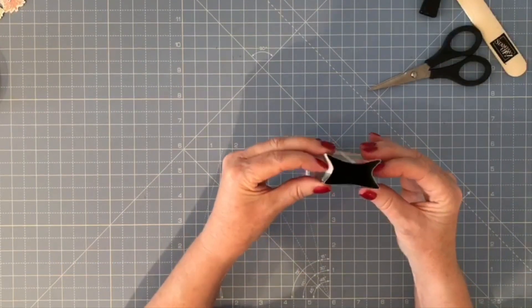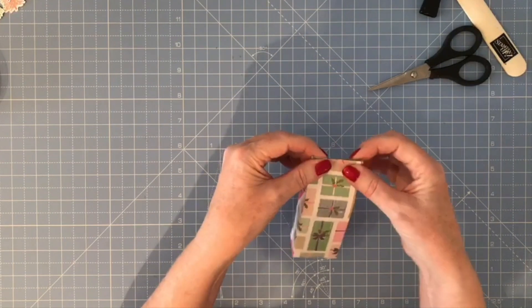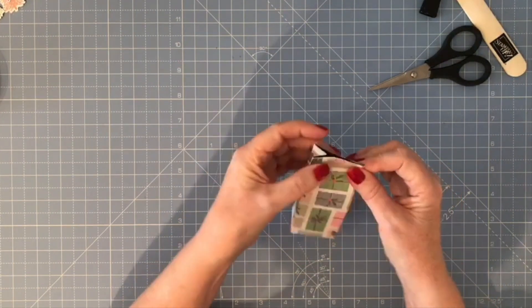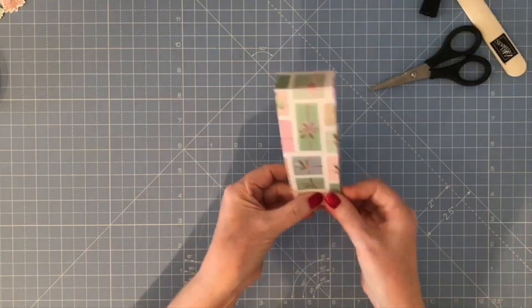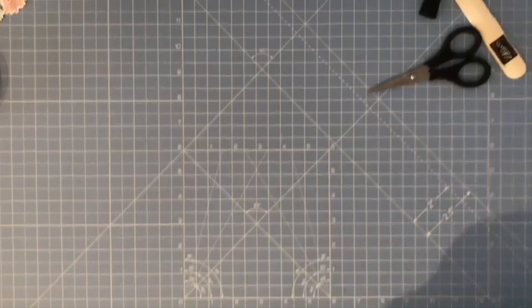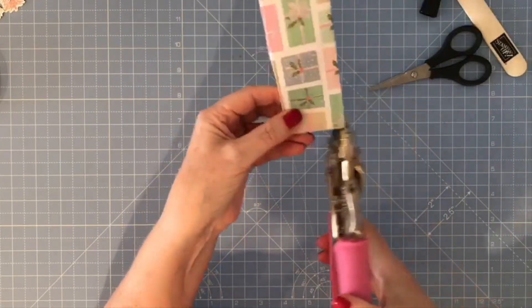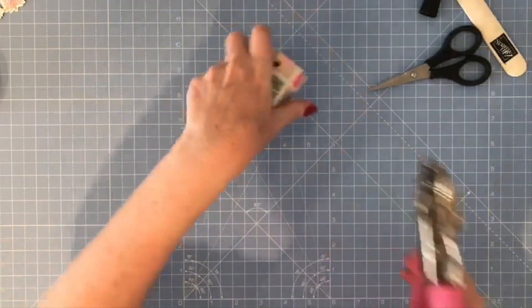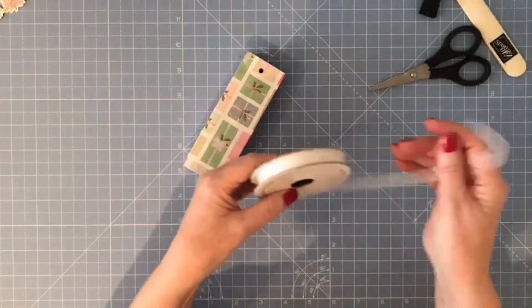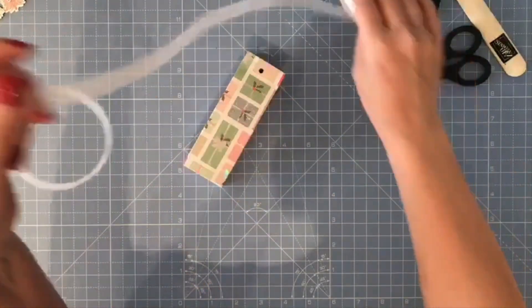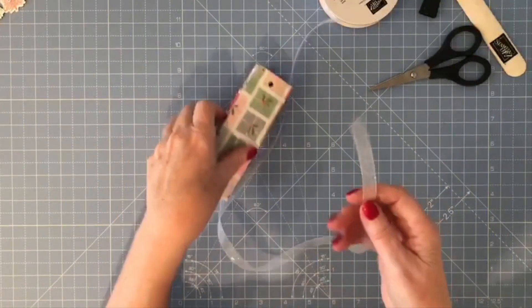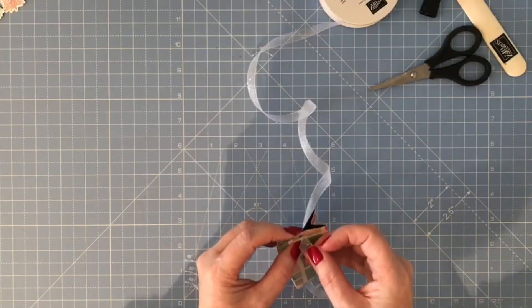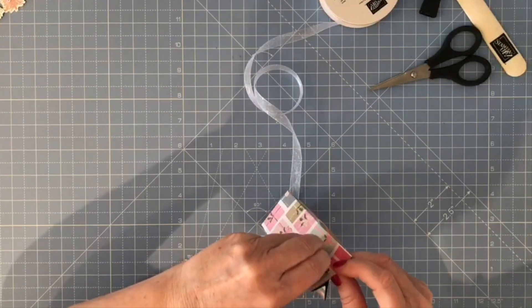You can pinch it in at the sides. Now you can either fold this over or what I did is got my Cropadile and using the biggest hole on my Cropadile, I'm just going to punch a hole all the way through. Now I've got some of our Glitter Organdy Ribbon. All these products are available in my online Stampin' Up shop, and I'm going to feed this through the hole.